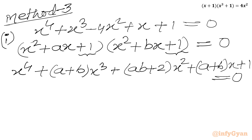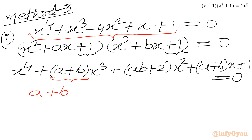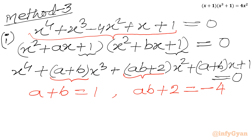Now we compare coefficients on both sides with our quartic equation. Comparing the coefficient of x³: a + b = 1. Comparing the coefficient of x²: ab + 2 = -4, so ab = -6.